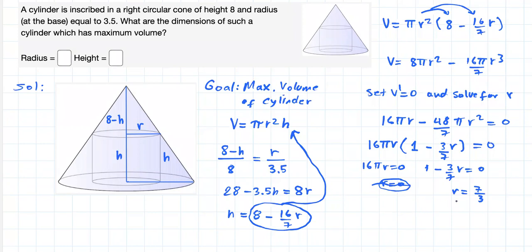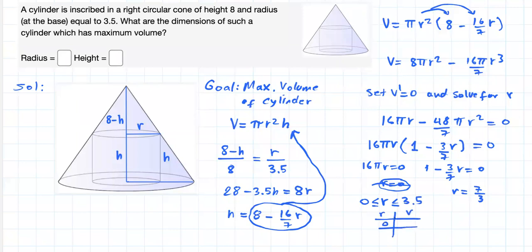Just to make sure this is the value that will do the job, let's evaluate the extreme values. R ranges from 0 to 3.5, so we'll construct a little table of r and volume. If r equals 0, the volume is 0. And if r equals 3.5, the volume is still 0, because if r is 3.5 there is no height — the height will be 0 — so that leads to volume equal to 0.